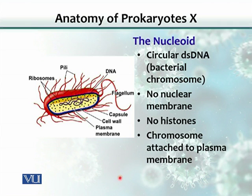It does not mean that there are no proteins associated with DNA in prokaryotes — there are, but they are called non-histone proteins. Also to be noted is that the chromosome is attached to the plasma membrane. Although not shown in this picture, this nucleoid, which is the chromosome, is attached to the inside of the cell membrane.